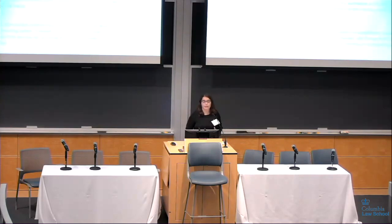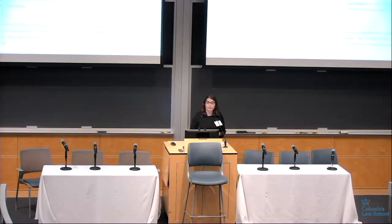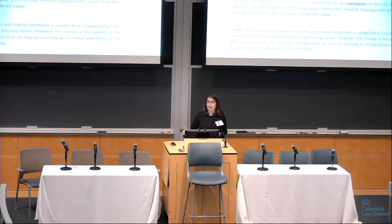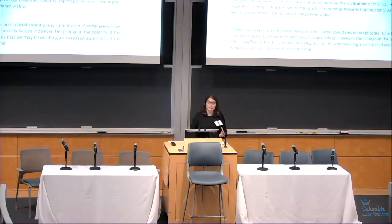The main takeaways: first, the existence of high vulnerability within the 100-year floodplain is significantly correlated with population loss, indicating that individuals in these zones are aware of their risk and are mitigating it via relocation. This awareness is not dependent on the realization of this risk. However, the repetition of major disaster events may push communities toward tipping points where their pre-existing settlements are no longer considered viable. The relationship between hazards and coastal conditions is complicated — coastal areas have faced increased development and rising housing values, but the change in polarity of the effect coefficient indicates we may be reaching increased awareness of the dangers inherent in coastal living.